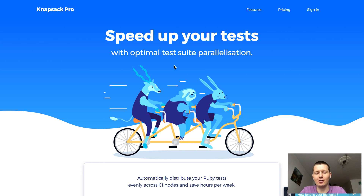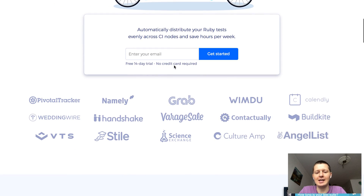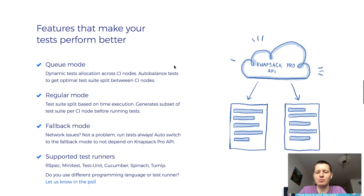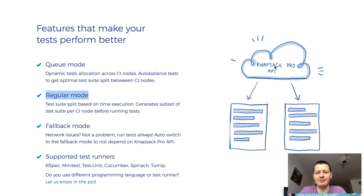Knapsack Pro can help you with that because it measures the tests timing and uses this knowledge to better allocate your test files across your multiple CI nodes. In simple terms, Knapsack has something called regular mode, which does a deterministic split. Based on the knowledge about your test files timing, it can better allocate your test files across multiple CI nodes — so half of your test files go to the first CI node and the other half goes to the second CI node. This way you get the result of your CI build passing or not faster.